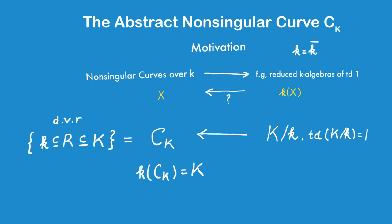And here's the spoiler. So this curve C_K here is going to be, as a set, the set of discrete valuation rings that are contained between little k and big K.